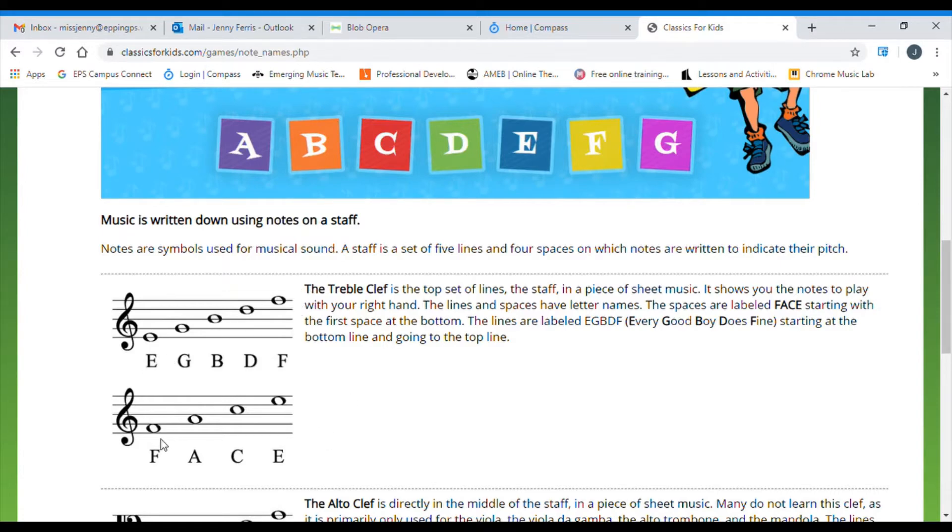The spaces of the stave are really easy to remember because they spell out the word FACE. FACE for spaces. F at the bottom, then A, then C, and then E at the top. Try and remember these little acronyms, FACE for spaces, and Every Good Boy Deserves Fruit, or Every Good Boy Does Fine, for the lines.